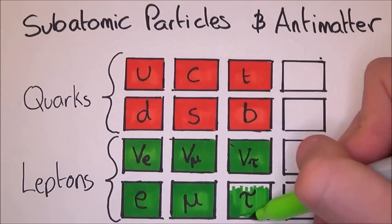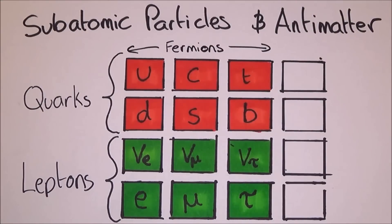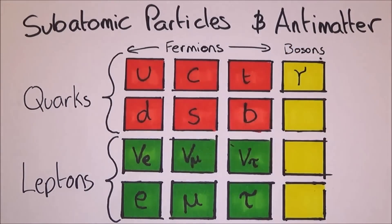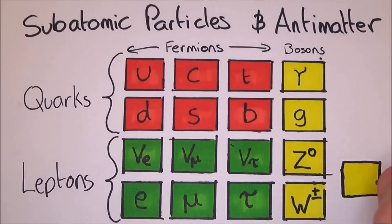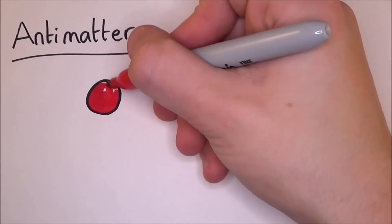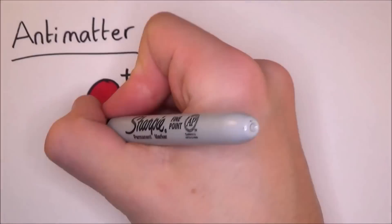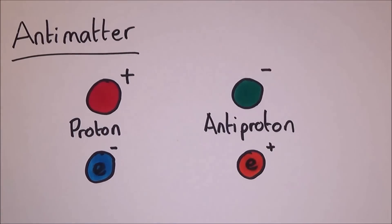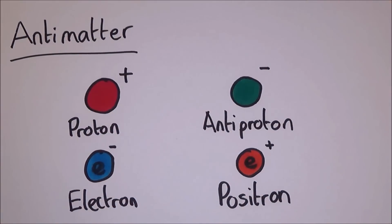All leptons are in the same family — all the neutrinos have no charge, and the electrons, muons, and tau all have negative charge. There is also the singular scalar Higgs boson. Antimatter is basically the opposite of matter — it is the same, but everything has the opposite charge. For example, an electron and a positron have the same mass but different charges.